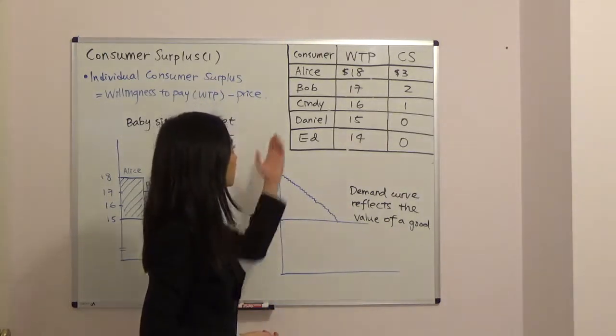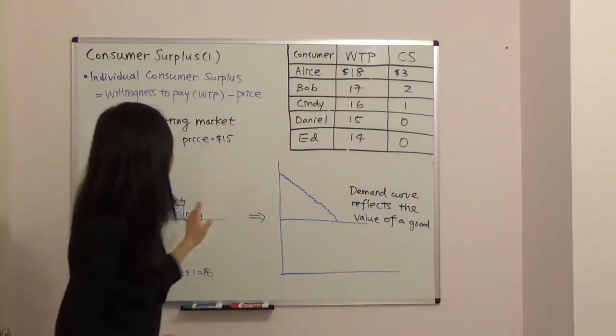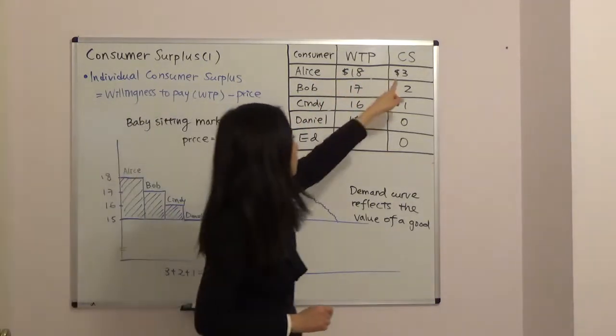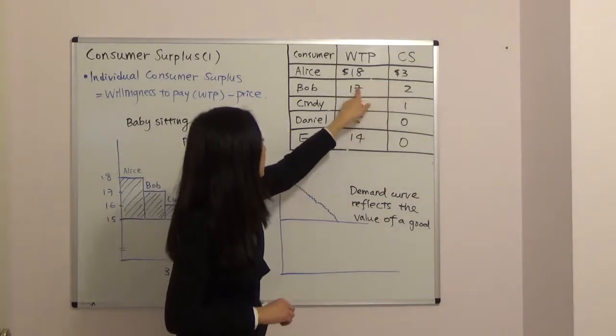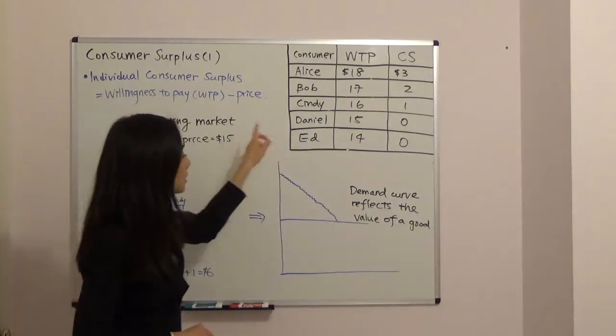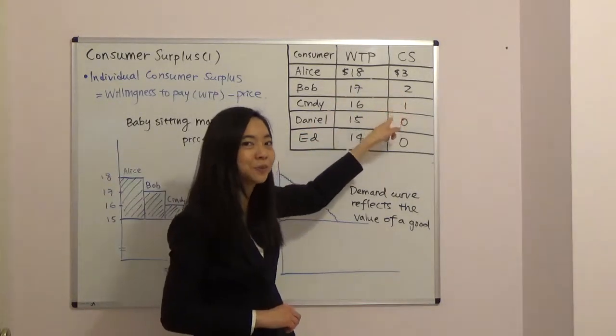So you can see consumer surplus for Alice will be eighteen minus fifteen, that gives you three. And Bob, his consumer surplus will be seventeen minus fifteen, that gives you two. And so on and so forth.